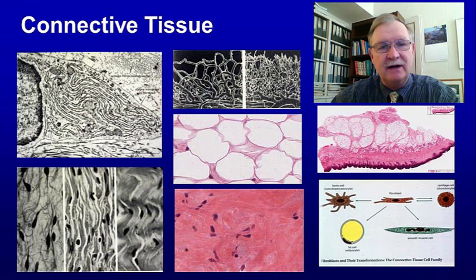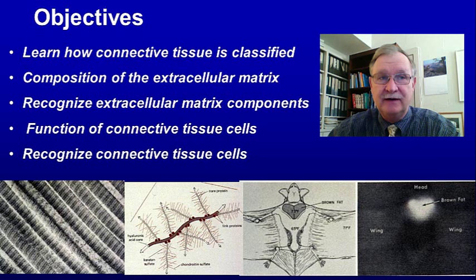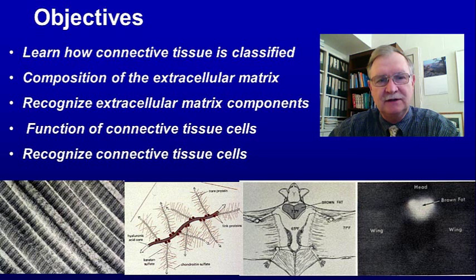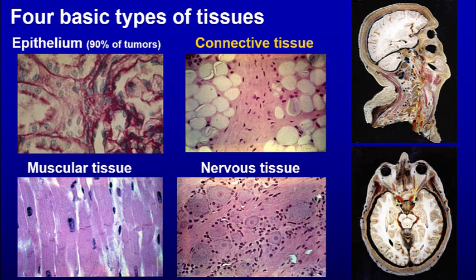Hi, this is Larry Johnson. I'm a professor at Texas A&M University and today we're going to talk about connective tissue. We want to learn how connective tissue is classified, the composition of extracellular matrix, how to recognize extracellular matrix components — whether fibers or matrix — and then we want to learn the function of the connective tissue cells and how to recognize the vast number of connective tissue cells.